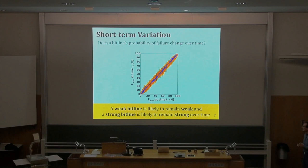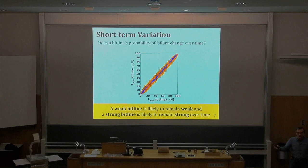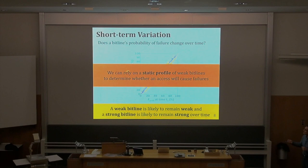This is not true for retention — with variable retention time, pretty much every hour you get a new bit failing, making correlation very difficult. Latency is a bit better, which means you can rely on a static profile of weak bit lines to determine whether an access will cause failures, and maybe do dynamic profiling at very long intervals. There's more research to be done especially for aging effects in DRAM and in memories in general.